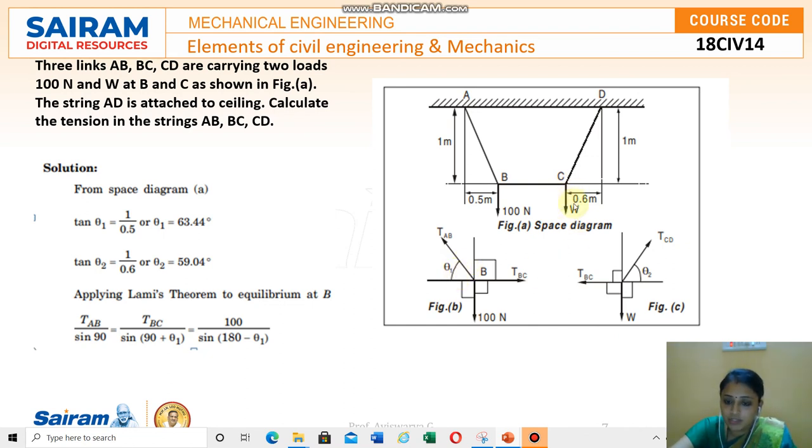Again for TBC, for joint C just mention the W load on one side and TBC, this is a tensile force, and TCD. Mark this one as theta 2 and make two FBDs. Wherever you find three force system you have to draw a FBD. Here we have found two three force systems, so two FBDs I have made. In the next class I will teach you how to solve this. Thank you.